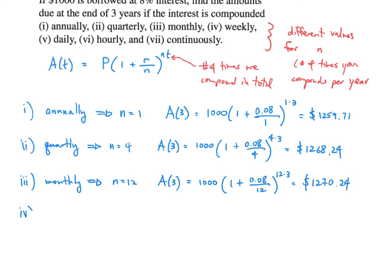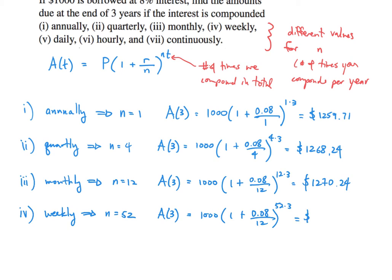For the fourth part, we're looking at weekly. There are 52 weeks in a year, so n is equal to 52. After three years, we're going to have 1,000 times 1 plus 0.08 divided by 52, all raised to the 52 times 3. We're compounding 156 times total, and we're going to get $1,271.01.